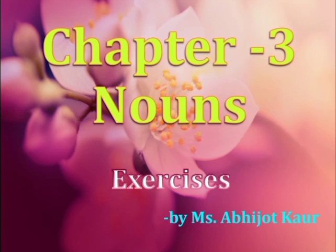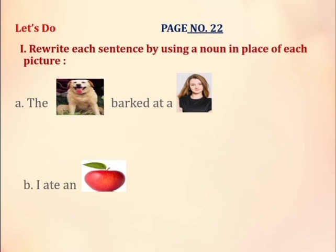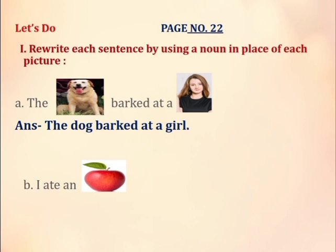So let's start. On page number 22, we have the question: Rewrite each sentence by using a noun in place of each picture. Here we can see in the A part, we have the picture of a dog as well as of a girl. So we'll rewrite the sentence as: The dog barked at a girl.